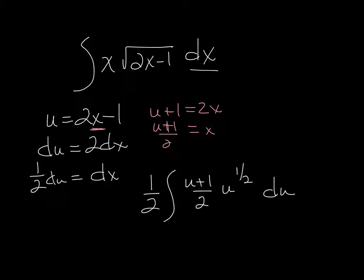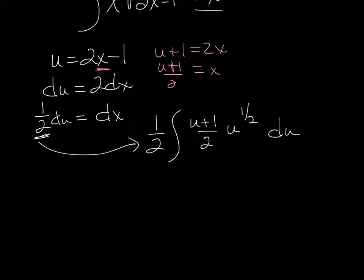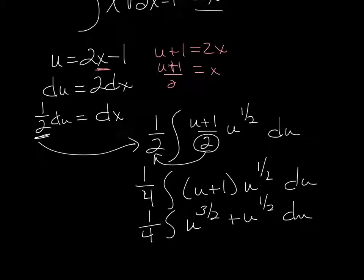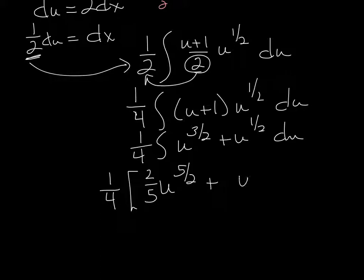Since (u plus 1) over 2 is a constant, I can just pull that out, and this becomes one-fourth. We usually just go ahead and put that in the front — move that other one-half out and make this one-fourth. Now this isn't so bad, because I can distribute my u to the 1/2. And we have u to the 3/2 plus u to the 1/2 du.